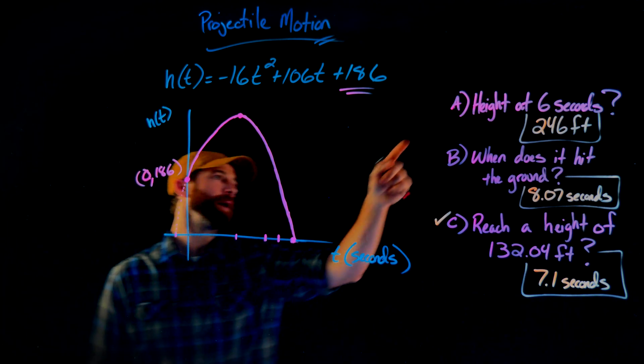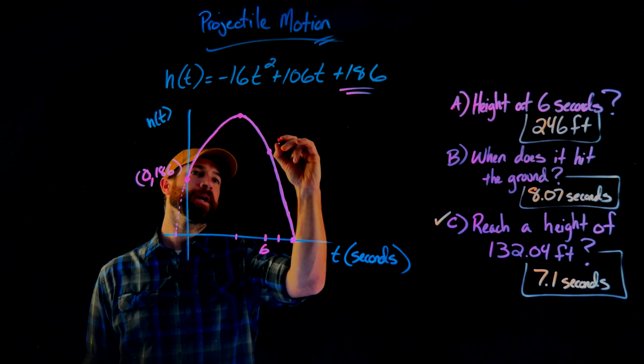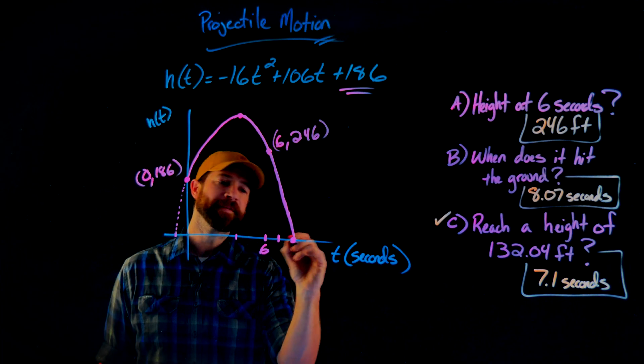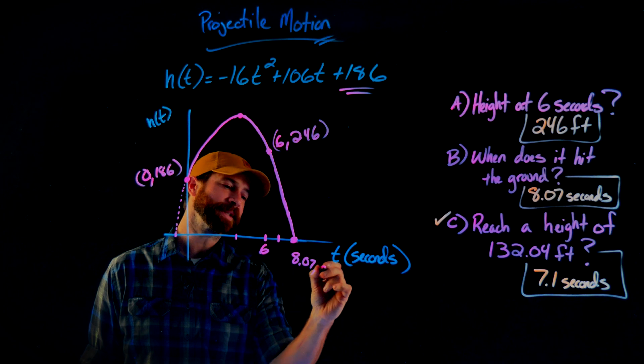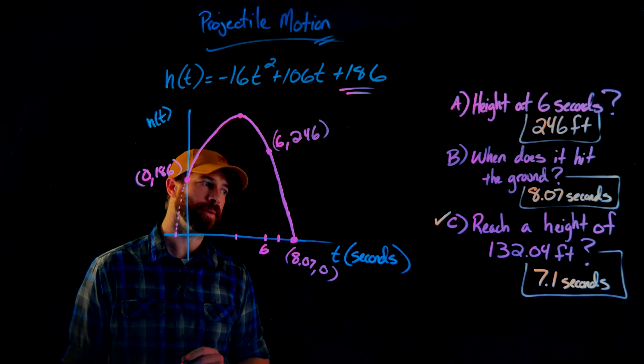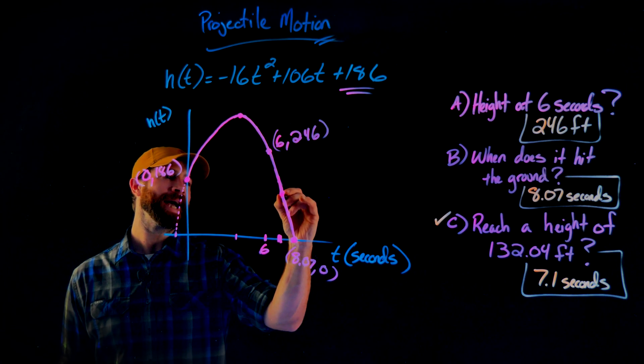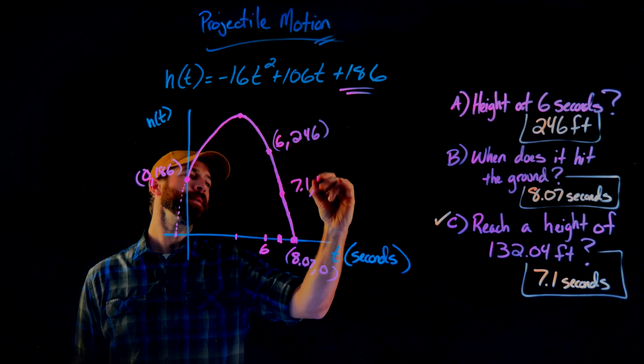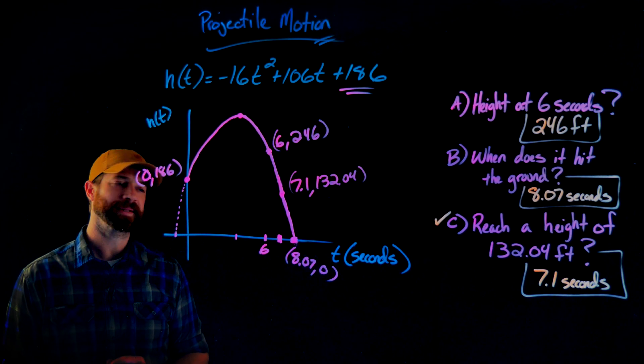We also found that at six seconds, this object has a height of 246 feet. We found that it hits the ground here at 8.07 seconds where the height is zero. We also found that between six seconds and when this object hit the ground, this object had a height of 132.04 feet after 7.1 seconds.